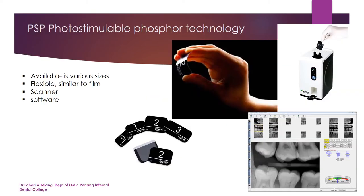When talking about PSP or photostimulable phosphor technology, it's a slightly different technology. It's available in various sizes — about three to four sizes — very similar to dental film: size 0 for children, size 1 for anterior, size 2 for posterior or standard, and size 3 is a longer film for bitewings.